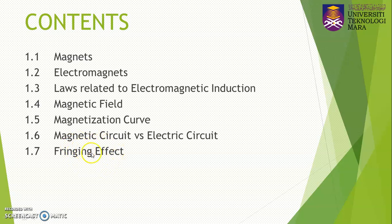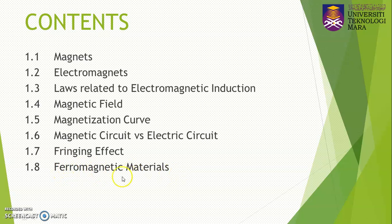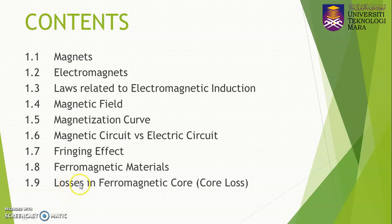The fringing effect is due to the magnetic circuit when it contains an air gap in the circuit. After that, we are going to see what does it mean by ferromagnetic materials, and the last part covers the types of losses that occur in the ferromagnetic core. In this video, we are going to cover only subtopics number one — magnets — and subtopics number two — electromagnets. The rest will be covered in the next video.